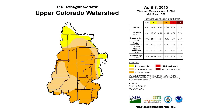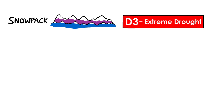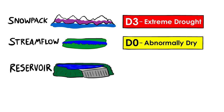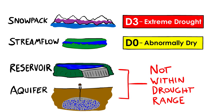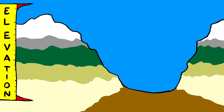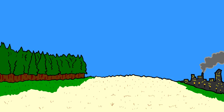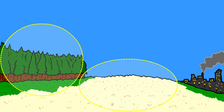Take the Upper Colorado River Basin as an example. It may show snowpack at D3 levels, the streams at D0, and the reservoirs and aquifers may not be within drought range at all. Elevation may cause a huge disparity in moisture, such as high snowpack in the upper mountains but very dry valleys. Add in more variables such as natural forests, grasslands, and human-managed landscapes all responding to drought quite differently.